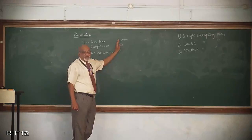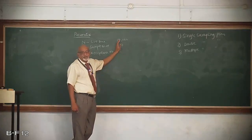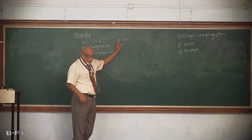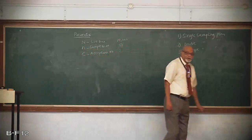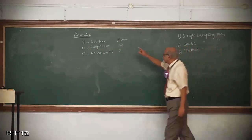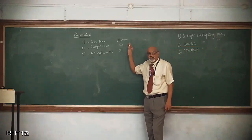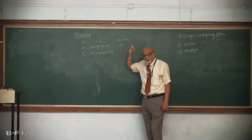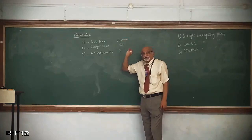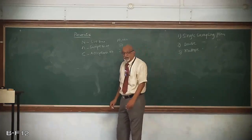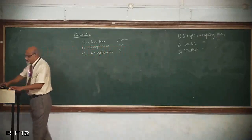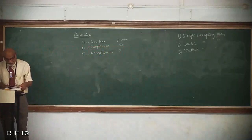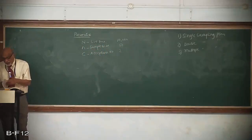Whereas if it were acceptance sampling, how many pieces will be inspected? The minimum we are going to inspect is 50, and the maximum number of items inspected will be 10,000. It will be anywhere between these two, depending on the quality of that particular lot. That is, average total inspection — on an average, how many pieces will be inspected — depends on that.